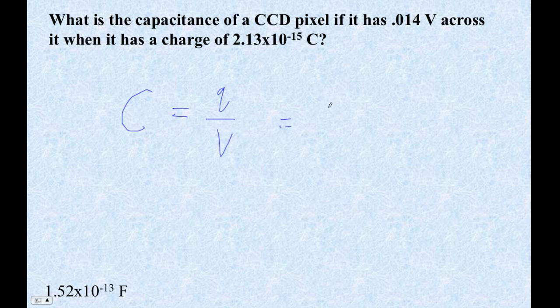So that's going to be 2.13×10^-15 coulombs divided by 0.014 volts, which isn't very much voltage, but it's also not very much charge. 2.13×10^-15 divided by 0.014 is 1.52 times 10 to the minus 13th farads.